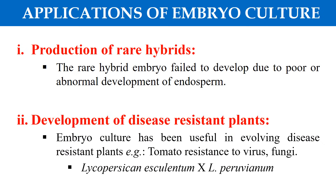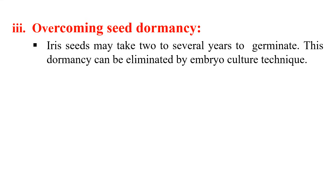The next application is development of disease-resistant plants. Embryo culture is very useful in evolving disease-resistant plants. For example, when tomato resistant to viruses and fungi is crossed with another plant, a disease-resistant plant is developed. Since the embryo of this cross may not grow properly in nature, we culture the embryo to develop the disease-resistant plant. Another application is overcoming seed dormancy — seeds that take many years to germinate can have their dormancy broken by taking out the embryo and culturing it under in vitro conditions.